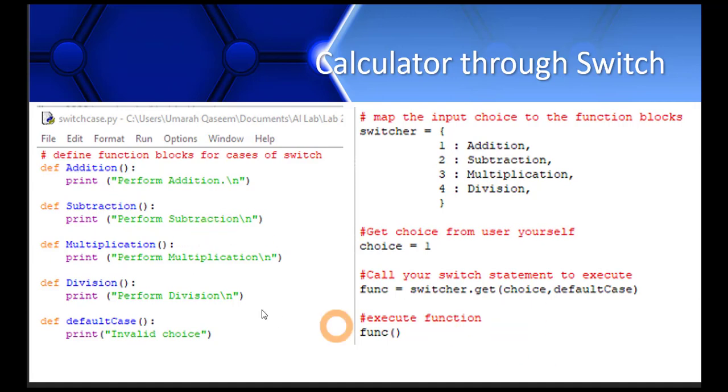Now let's see how I'm using it like a switch. I'm using that function get which we just looked at. So switcher, the name of my dictionary, dot get. Then there are two arguments: choice and default_case. This choice is actually this variable which you will take from user, which is one right now.